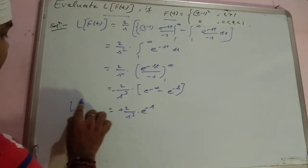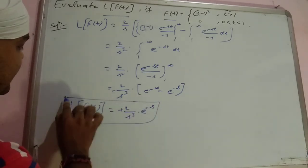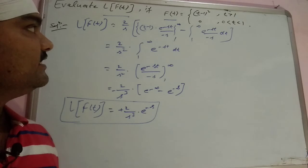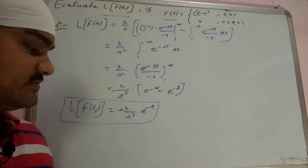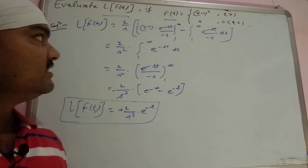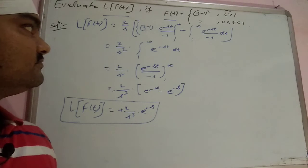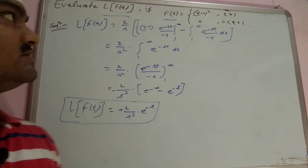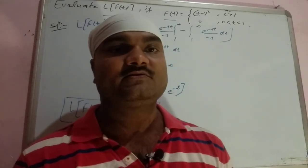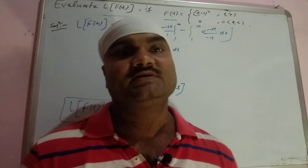So this is the final answer: 2e^(-s) upon s cubed. This was a somewhat involved question; if you have any doubts, watch the video again, pause and write along. In today's video that's all; in the next video we'll cover some more theorems and problems. Thanks for watching, thank you.